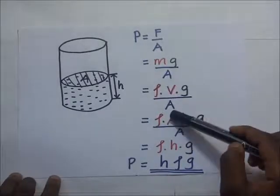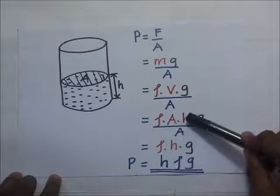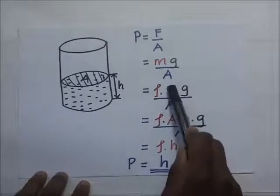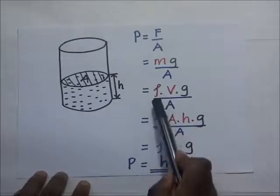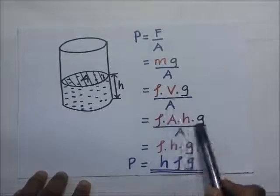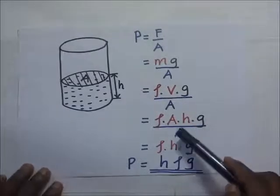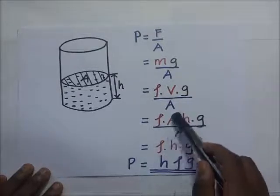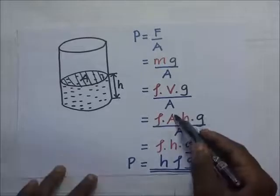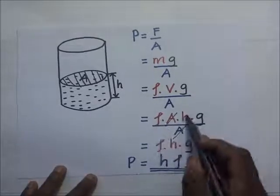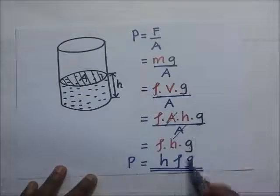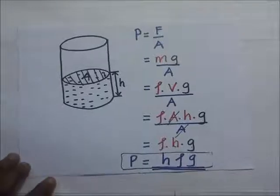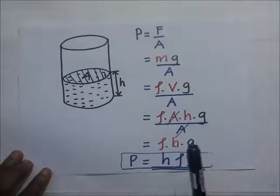So the volume is cross-sectional area A times height h, substituting for V. We still have density and gravity, all divided by A. The A in the numerator cancels with the A in the denominator, and we are left with density times height times gravity. This is how we arrive at P = hρg — height times density times gravity — which is the pressure in liquids.